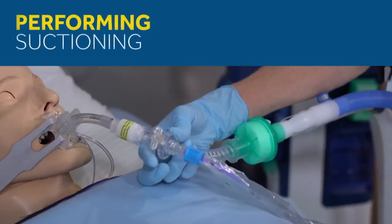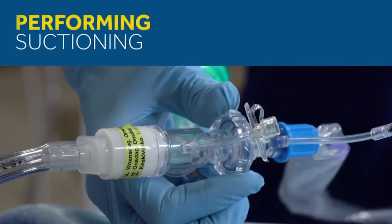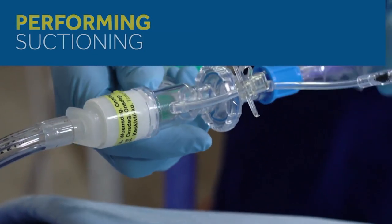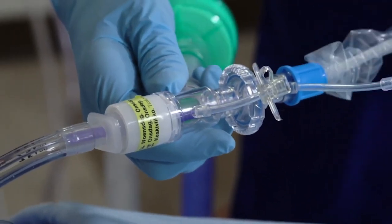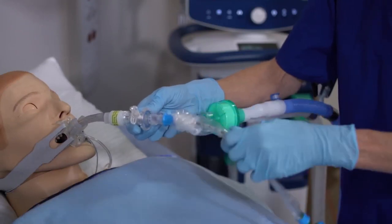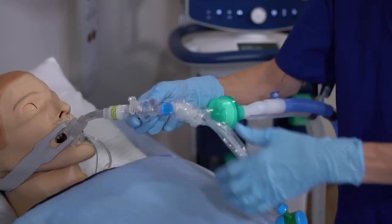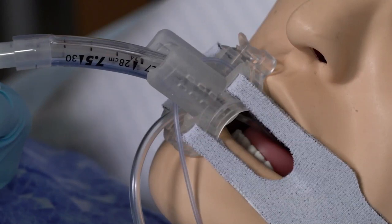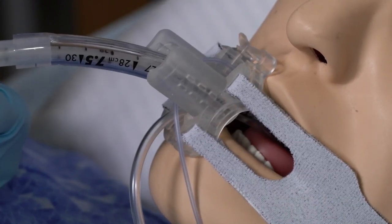To perform suctioning, open the patient access valve with a counterclockwise rotation. Gently insert the DAR closed suction catheter in the endotracheal or tracheostomy tube. The soft tip and the firmer proximal end of the catheter allow an easy insertion and manipulation through the sleeved catheter.